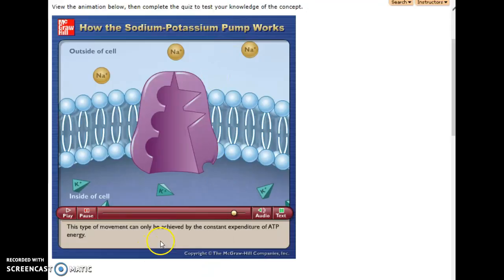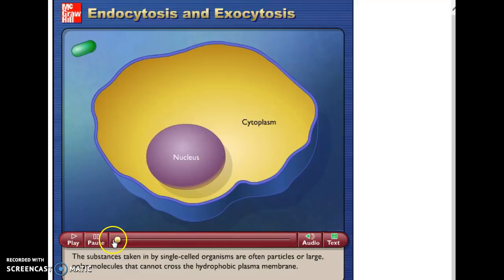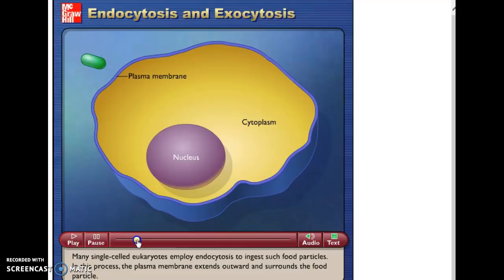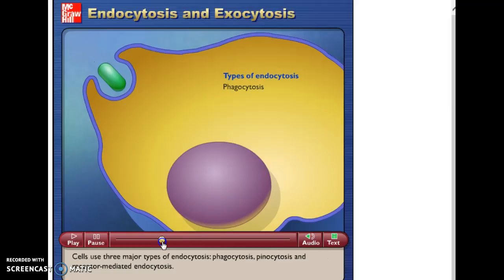Our final type of active transport is called endo and exocytosis. Endocytosis is when something is taken into a cell. Endocytosis might be food or something that's very large so it can't fit through even protein channels. It's not obvious. It doesn't show low to high concentration very well with these animations. It also doesn't show that energy is required but what we have to recognize is that endocytosis and exocytosis are forms of active transport. There would be energy required in order to do this process.